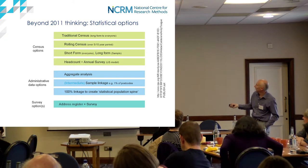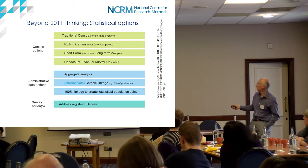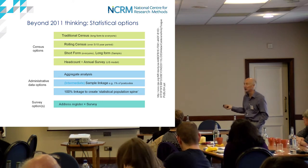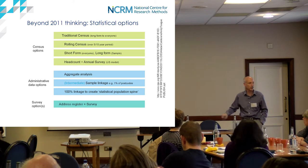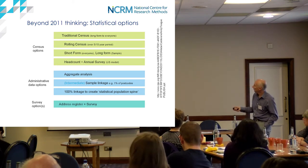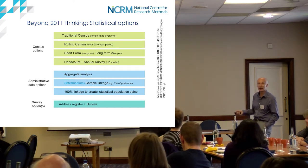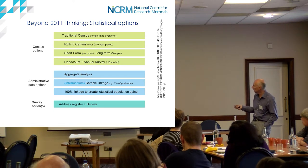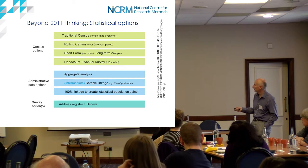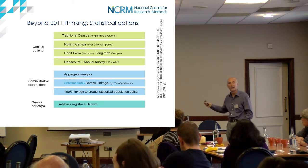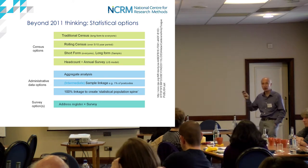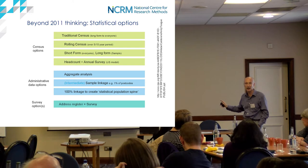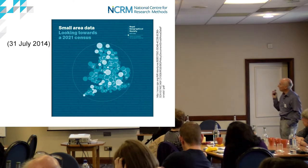The question being asked is: if you can model the relationship between the lines and you've got the other sources anyway, why spend all that money getting the middle line? That's what underlies all of this. ONS ran a project for two or three years called 'Beyond 2011.' They looked at a whole range of census options: traditional census, rolling census like the US or France, short form sent to everyone, head count plus annual survey, or various admin data options.